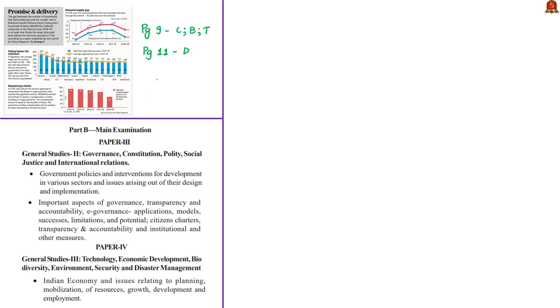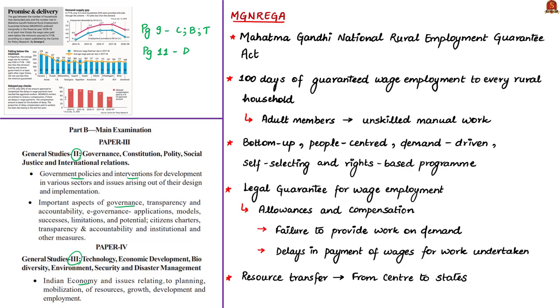The analysis of this data point will be helpful in your mains preparation, especially in General Studies Paper 2 under government policies and interventions and issues related to governance, and in General Studies Paper 3 under Indian economy, particularly issues related to employment. MGNREGA is the Mahatma Gandhi National Rural Employment Guarantee Scheme.